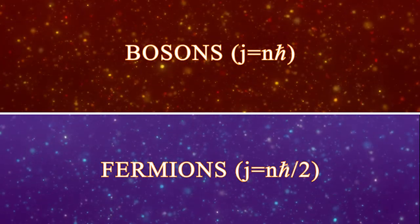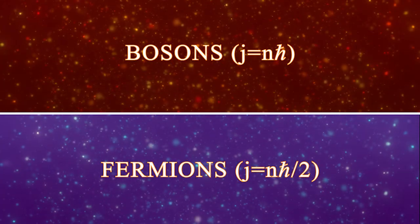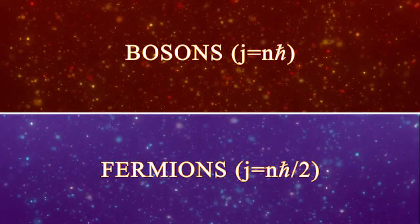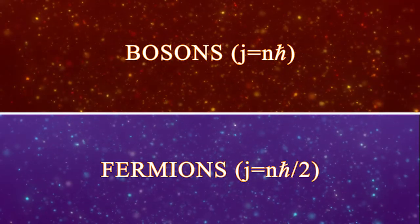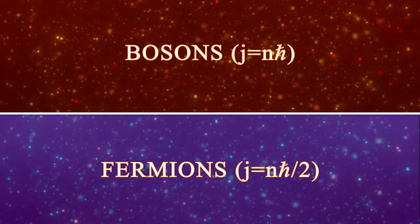We'll delve into the difference between these particles in our next video. For now, let's identify fermions like protons, neutrons, electrons, and neutrinos, all of which have a spin of half times the Planck constant.